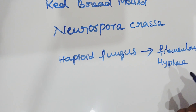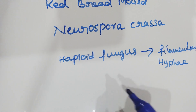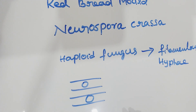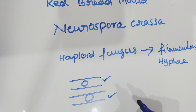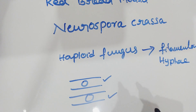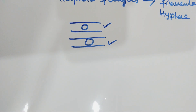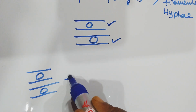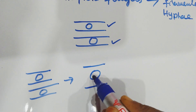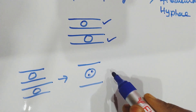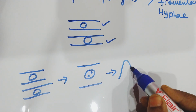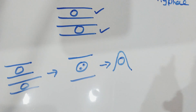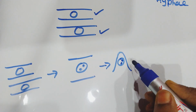During sexual reproduction, two haploid mycelia come together and mating occurs, resulting in a diploid zygote. When they come together, the cross walls disintegrate, resulting in the formation of a diploid zygote. The mycelium then protrudes into an ascus-like structure, where the zygote is present.